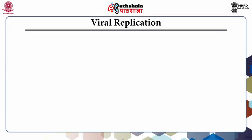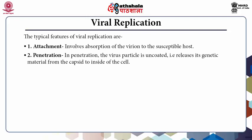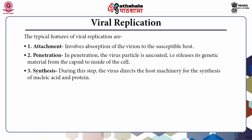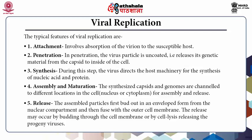Viral replication is quite important. The typical features of viral replication are: first, attachment — absorption of the virion to the susceptible host cell. Second, penetration — the virus particle is uncoated and releases its genetic material from the capsid into the host cell. Third, synthesis — during this step the virus directs the host machinery for synthesis of nucleic acid and protein. Last, assembly, maturation, and release — the synthesized capsid and genomes are channeled to different locations in the cell for assembly.